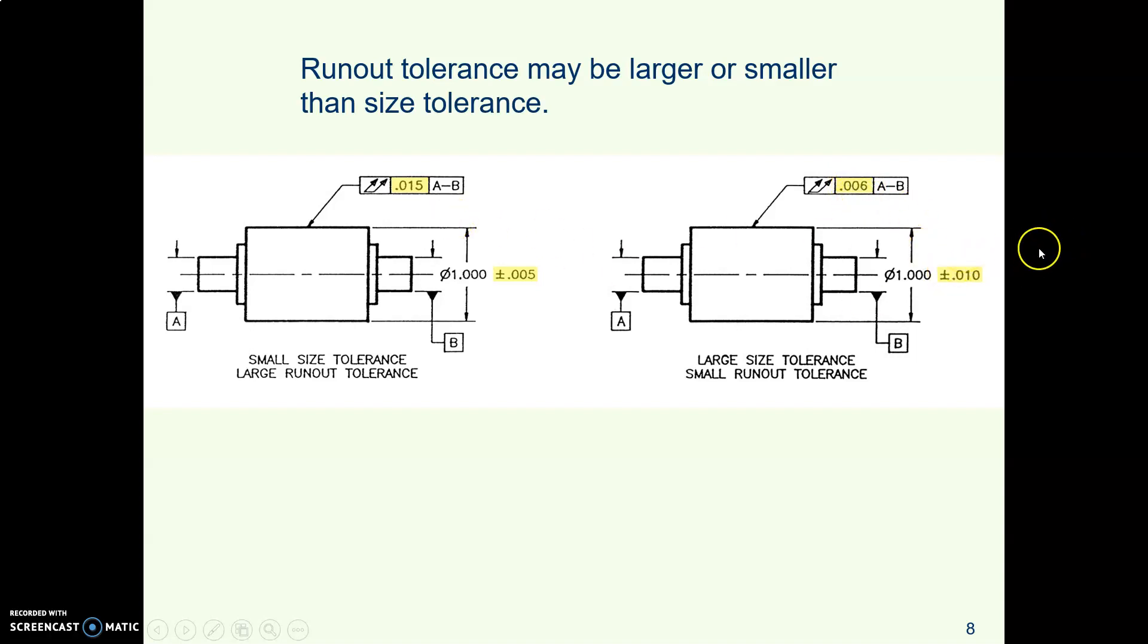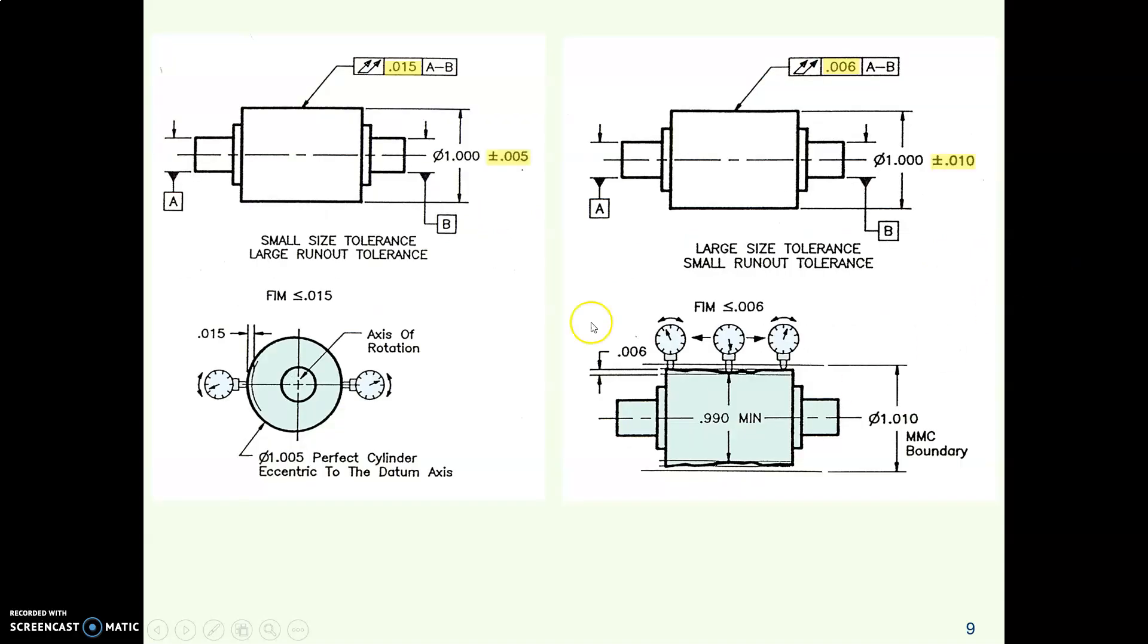But what this is saying is that you can go either way. So here on this slide is that same part again, where the runout tolerance is bigger than the size tolerance. And then here on the right is the other example where the runout tolerance is a small number relative to the size tolerance. And here in the lower right is a picture of that dial indicator continuously moving back and forth across the surface as the part rotates.